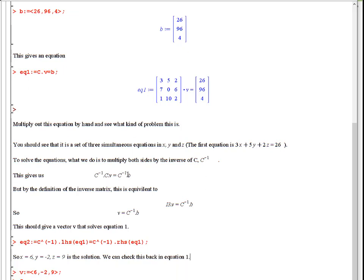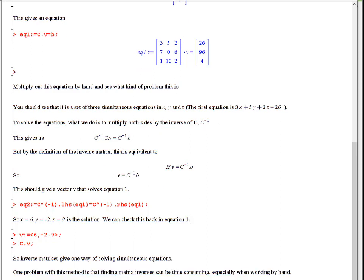Multiply both sides of the equation by the inverse of c, but notice on the left here, we're following the golden rule. So, the original equation, c times v equals b, and multiply both sides by c minus 1, so we have c minus 1 times c times v equals c minus 1 times b.